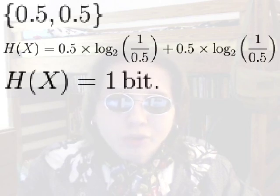Now, what about the strange coin? It lands on heads 75% of the time, and tails 25% of the time. Its probabilities are 0.75 and 0.25.